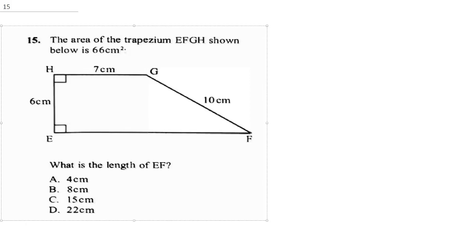Question 15 says, the area of a trapezium EFGH shown below is 66 cm². What is the length of EF? To solve this question, all you need to do is apply the formula for finding the area of a trapezium.